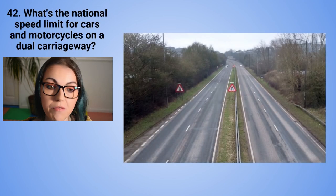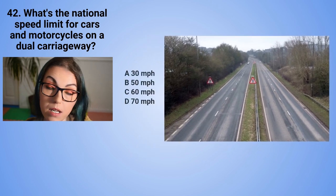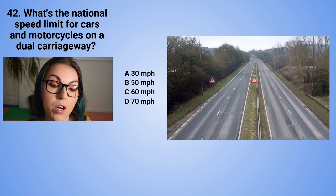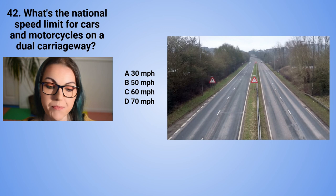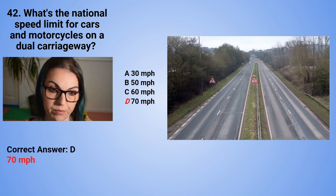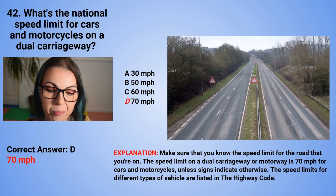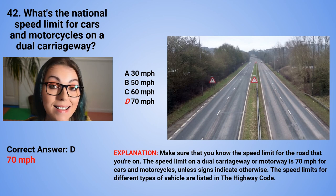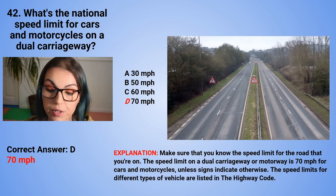Question 42: What's the national speed limit for cars and motorcycles on a dual carriageway? A. 30 mph. B. 50 mph. C. 60 mph. Or D. 70 mph. The correct answer is D — 70 mph. The speed limit on a dual carriageway or motorway is 70 mph for cars and motorcycles unless signs indicate otherwise. Speed limits for different vehicle types are listed in the Highway Code.